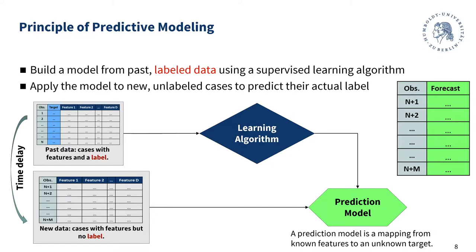In a nutshell, we have this transition from using data that we captured in the past, where we do know some outcome. We are in the space of predictive analytics, and we use methods called supervised machine learning. These methods process data captured in the past where we do have information about some outcome that matters to a business. We call this outcome a target variable, a dependent variable, a label, a response, or simply target.